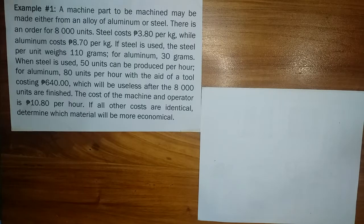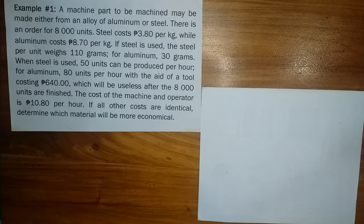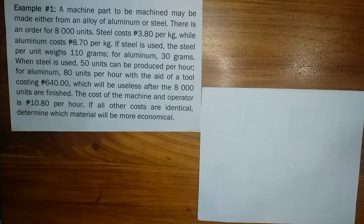When steel is used, 50 units can be produced per hour. For aluminum, 80 units per hour with the aid of a tool costing 640 pesos, but it will be useless after the 8,000 units are finished. The cost of the machine and operator is 10 pesos and 80 centavos per hour. If all other costs are identical, determine which material will be more economical.